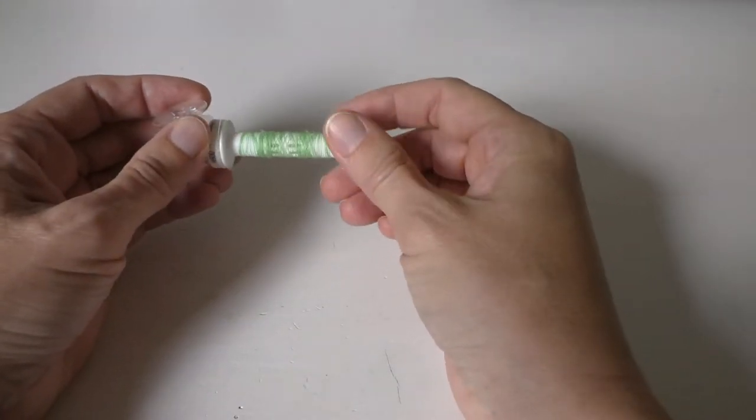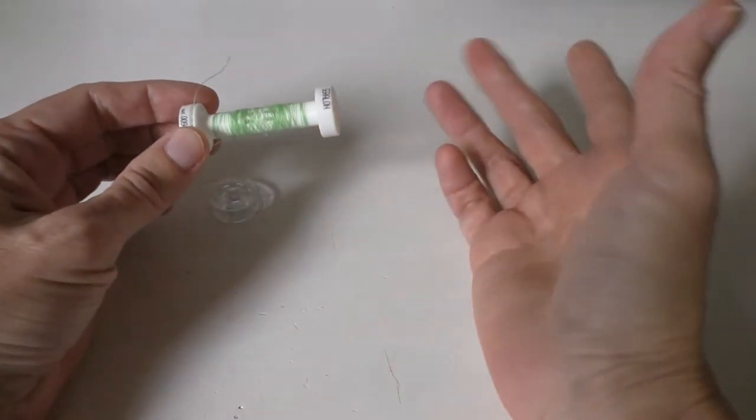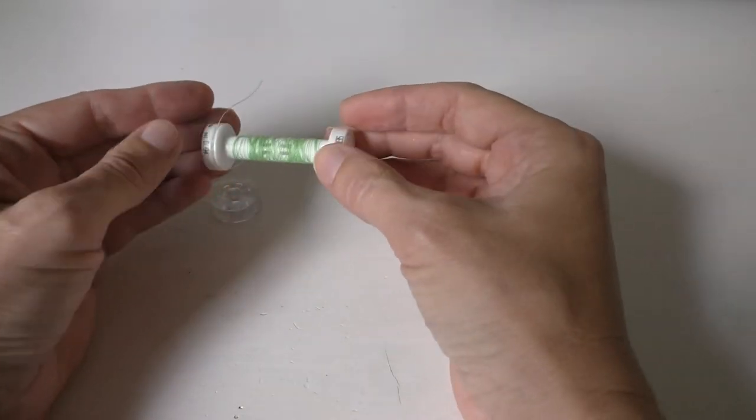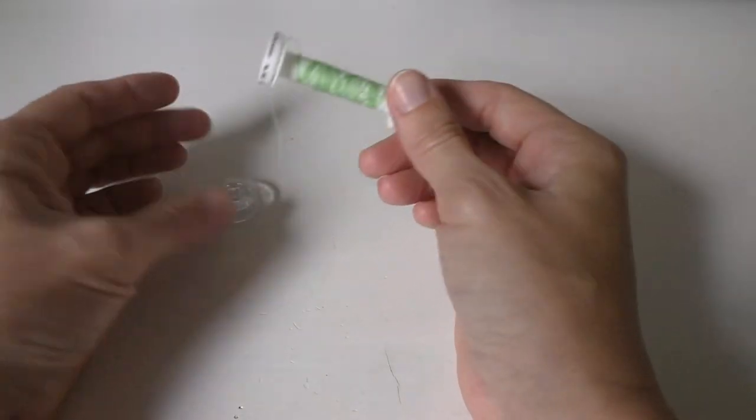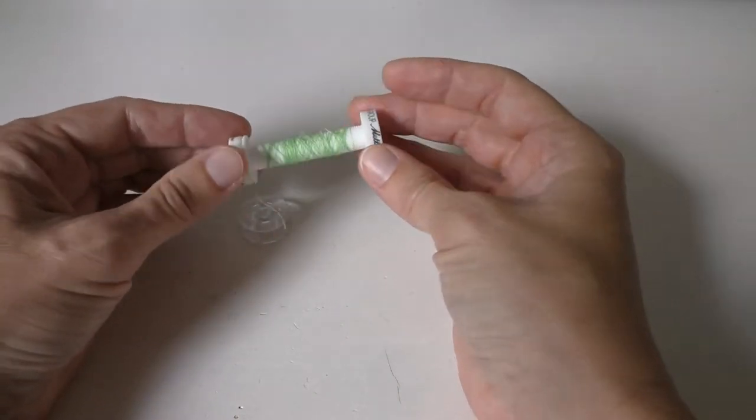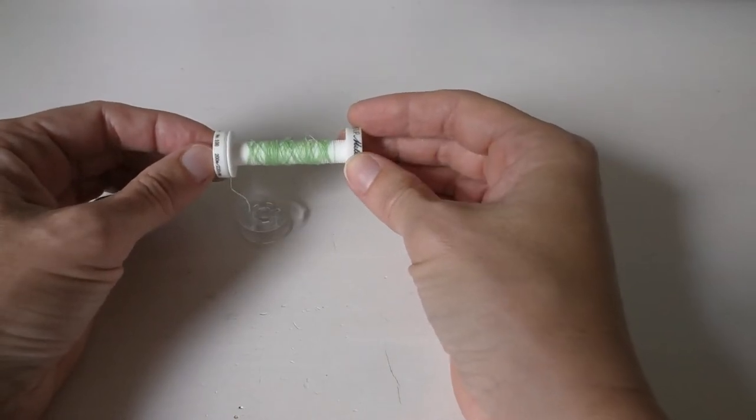And I figured out that even though these spools that we have here are actually meant to be thrown away after use, that they're actually a little bit nicer made than my plastic bobbin here. So I had the idea that I wanted to wind my thread onto a spool, but I was looking for an easy way to do it.